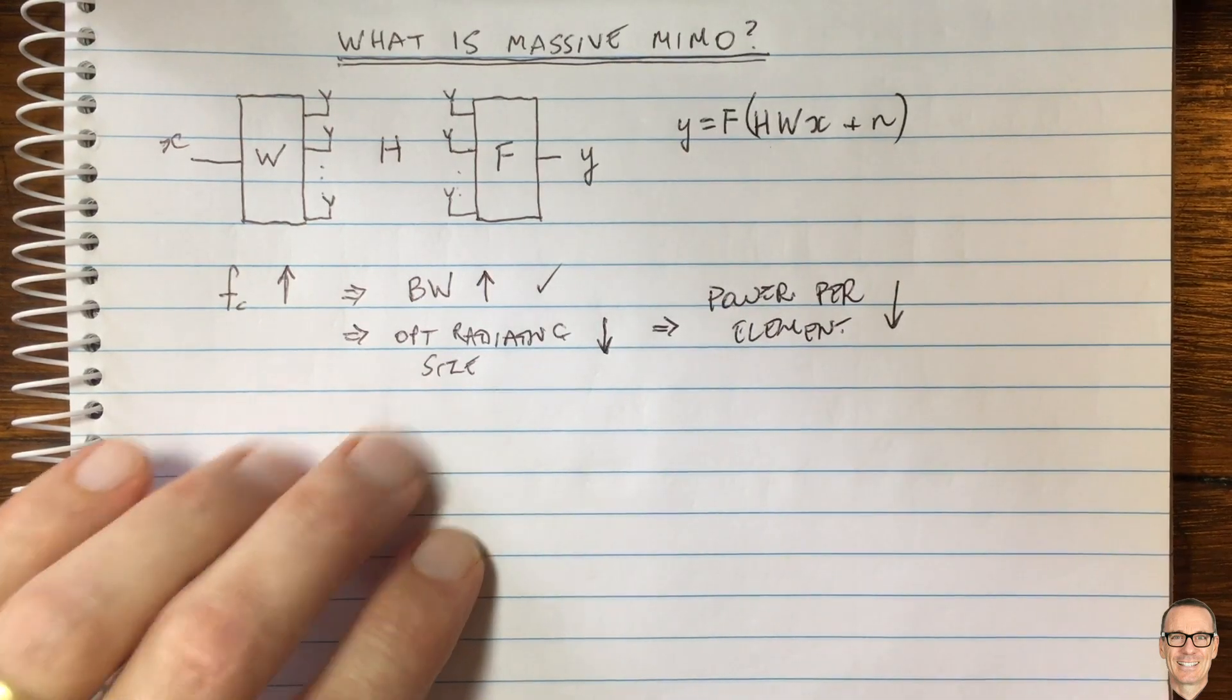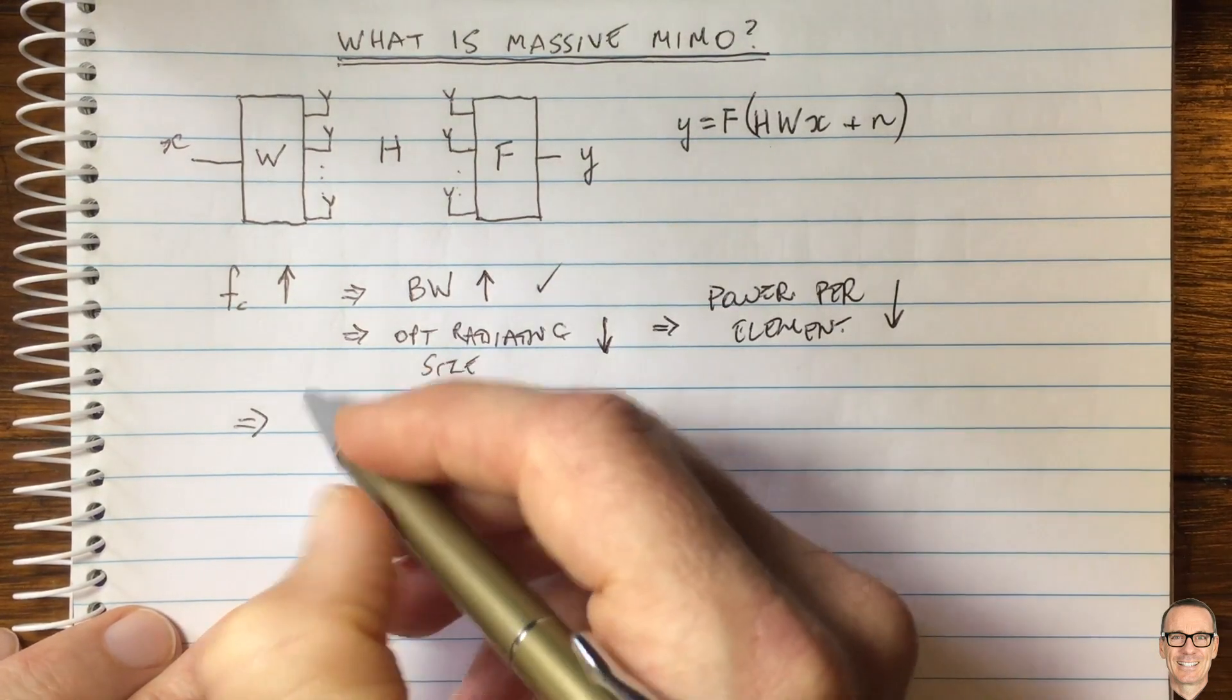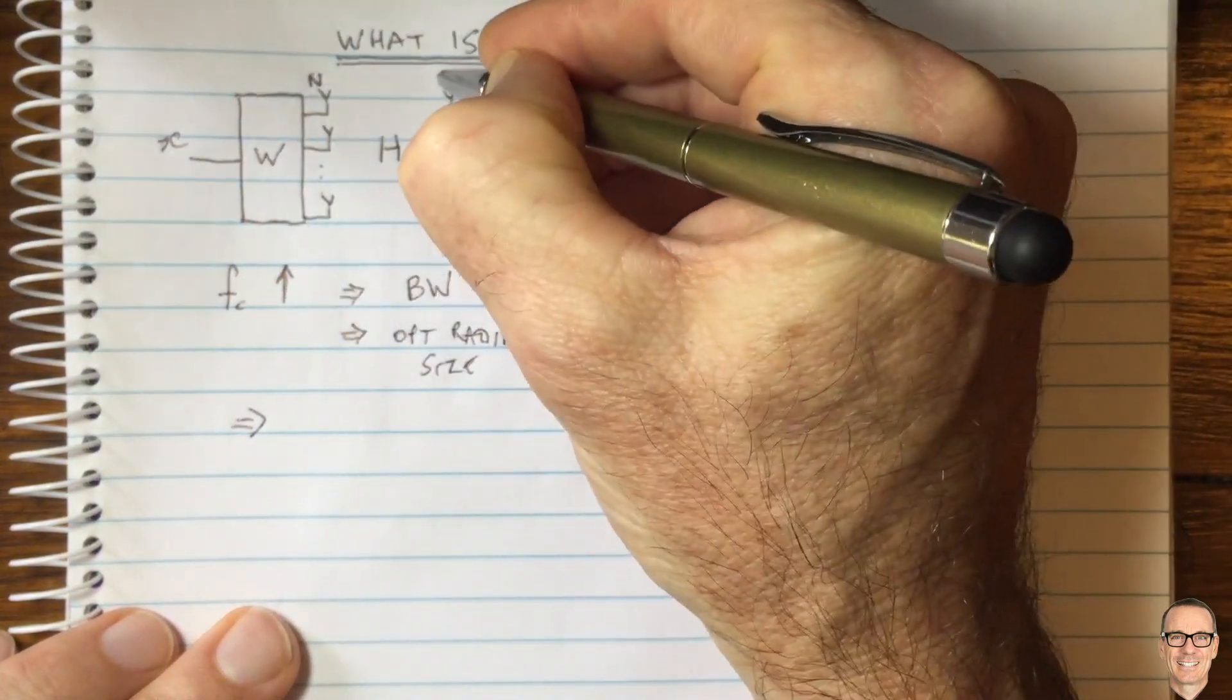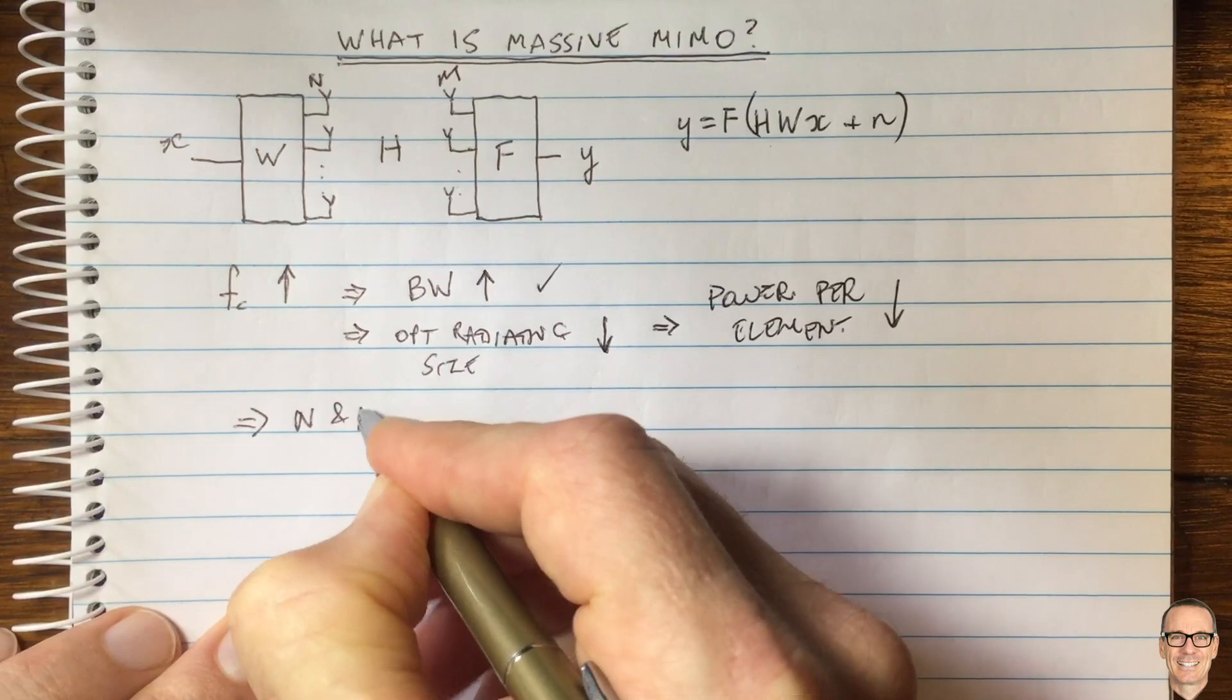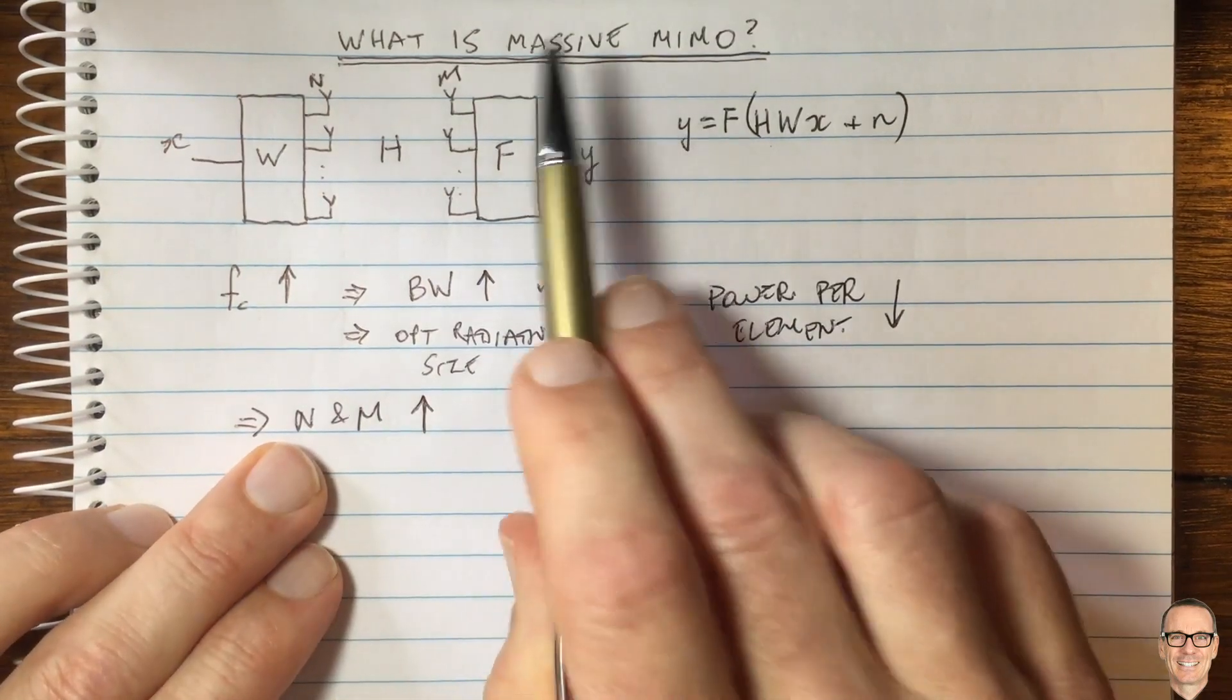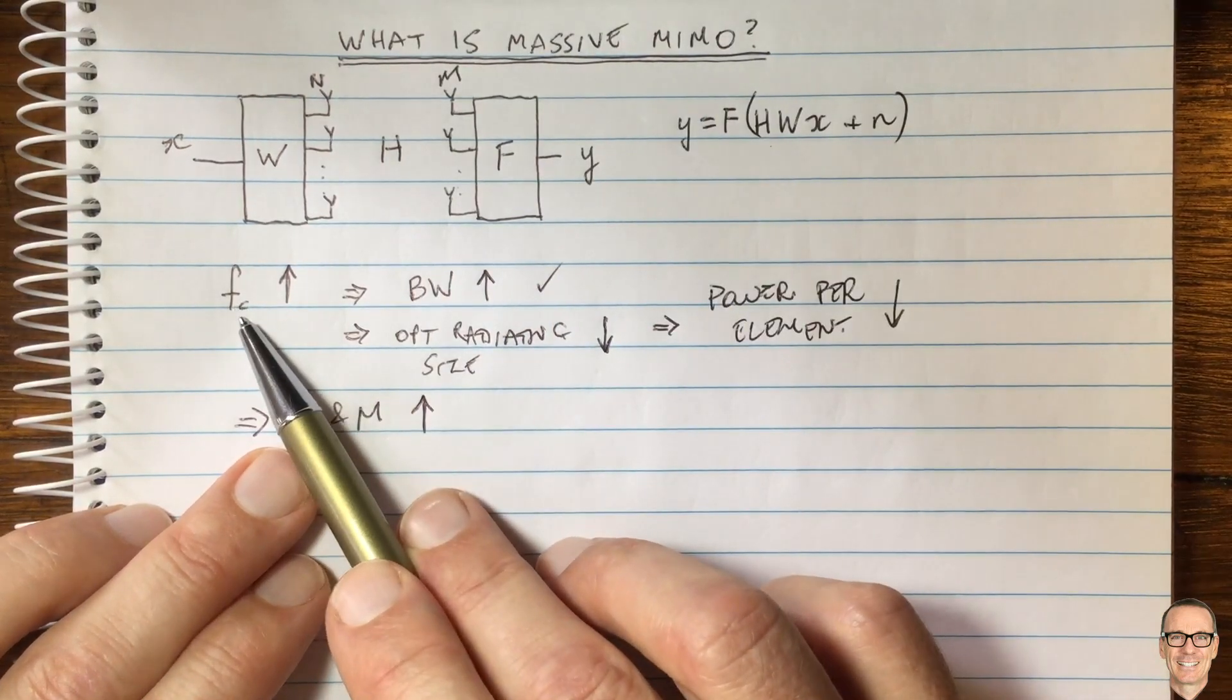As a result, you need more antennas. If you have n transmit antennas and m receive antennas, both n and m have to increase. This is where we get massive MIMO.